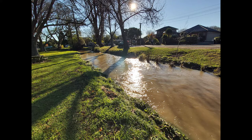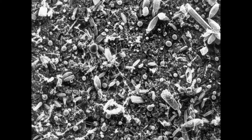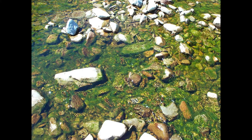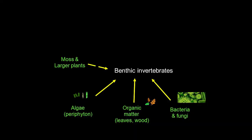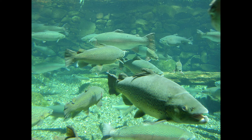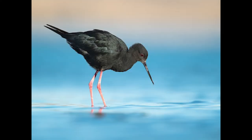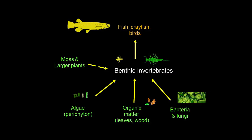They also play a really important role in the food web in streams and lakes. They eat things like bacteria, fungi, algae, and in some cases larger plants, and they also feed off decomposing organic matter like leaves and twigs that fall into our streams and rivers. While they themselves are eaten by larger organisms like fish, eels, crayfish, and some birds. So benthic invertebrates are a really important part of the whole food chain of a healthy waterway.